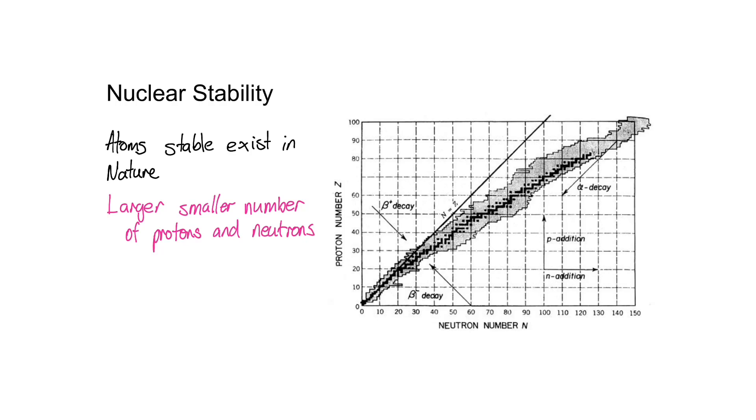And what they're trying to do is they're trying to get to these black points. What we can see here, though, is that the straight line, when the number of protons is equal to the number of neutrons, isn't followed as the atom gets heavier.